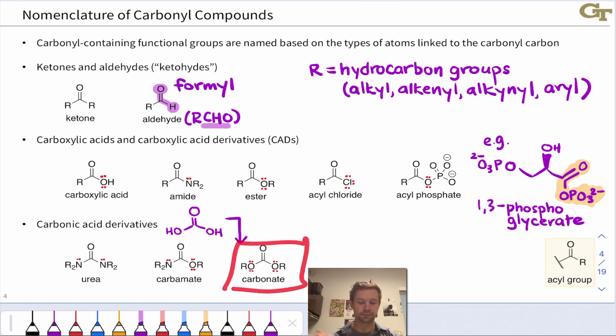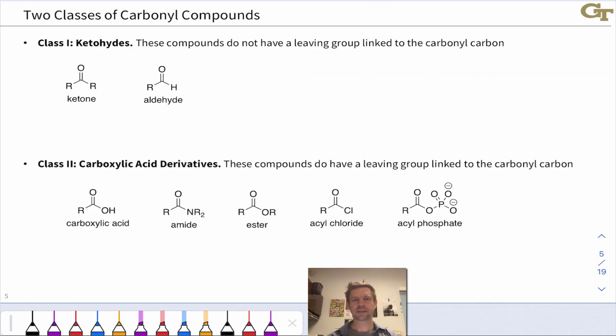This slide contrasts the two most important classes of carbonyl-containing functional groups. Class one is the ketohydes - ketones and aldehydes. These compounds lack a viable leaving group linked to the carbonyl carbon, because all they have are carbons or hydrogens linked to the carbonyl carbon.